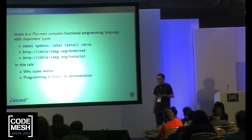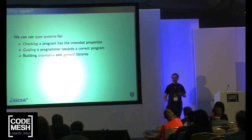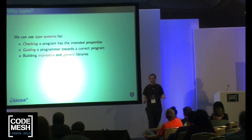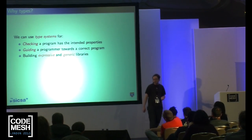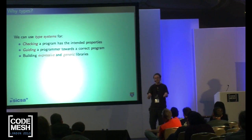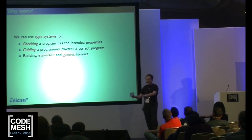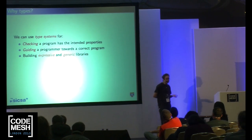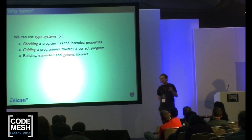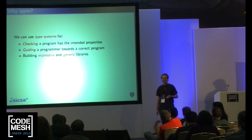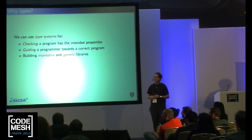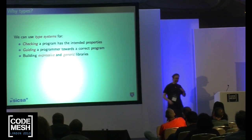I'm going to say a little bit about why types are important. Conventionally, we use type systems for checking that a program does the right thing. We might also use type systems for guiding the program towards the correct program — we have a type we're aiming for, we work out how to fill it in, and the machine will tell us whether we're right or not. My parents and teachers, before I even went to school, recognized the importance of type systems and taught me type theory.